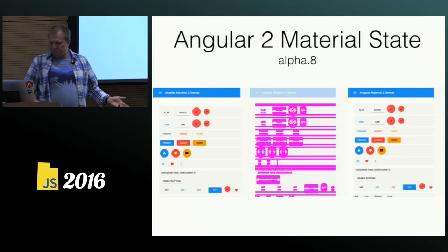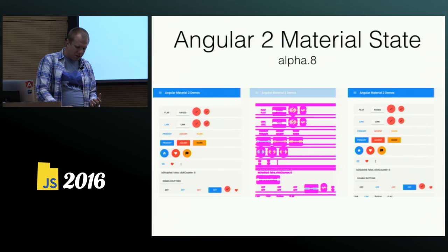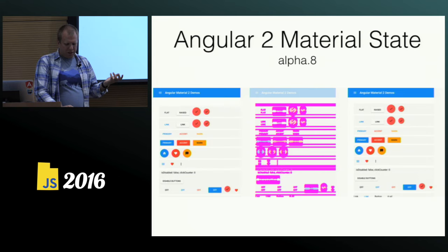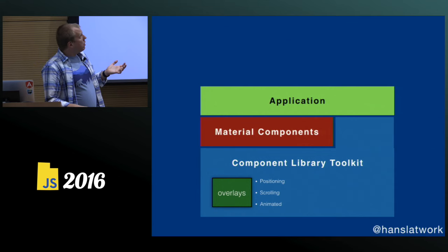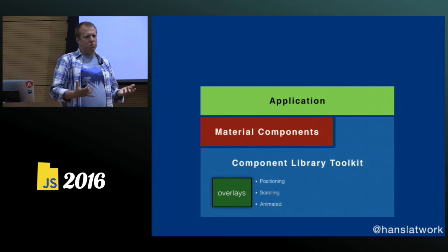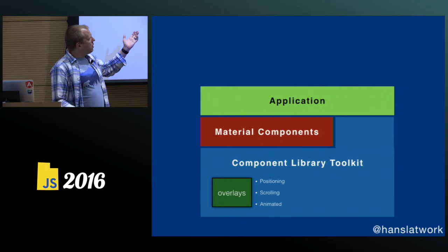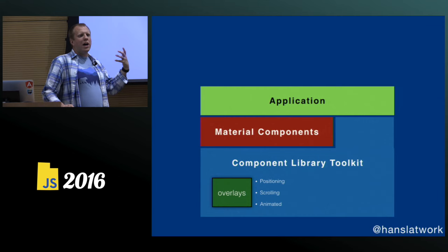What we want to do is really build a foundation for other libraries to be built upon. Basically you build your application on top of the material components. And we want you to be able to reuse it inside your own library. So if you're doing an Angular 2 library, we want to put out the component library toolkit with support for overlays.